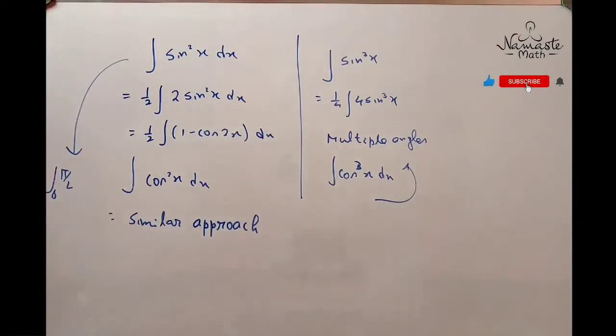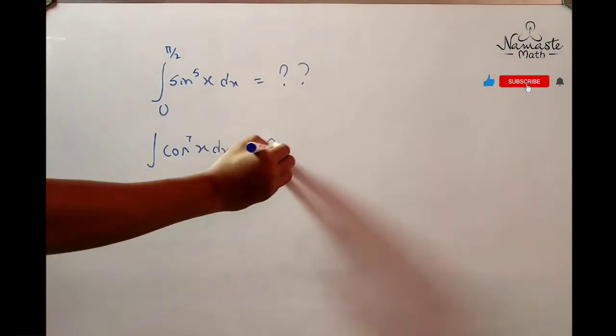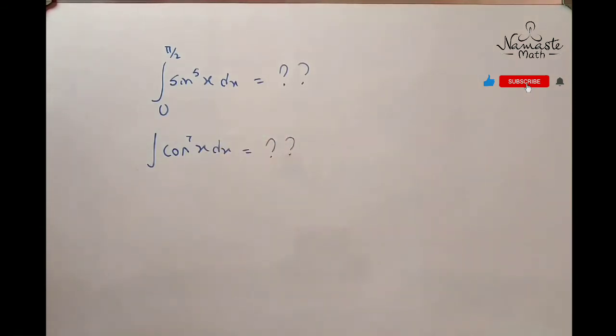Now if you are given the limit 0 to π/2, you just put the values in the last line and get the value. For higher powers of sin or cos with the limit 0 to π/2, you don't have the trick to evaluate those integrals. So this trick will help us integrate such higher powers.